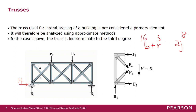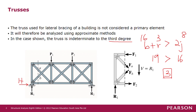If B plus R is greater than 2J, then the truss is statically indeterminate. The degree of indeterminacy is given by B plus R minus 2J. In this case, B plus R is 19 and 2J is 16, so B plus R is greater than 2J by 3, meaning we have indeterminacy to the third degree. This means we have 3 additional unknowns without available equations to solve, so we must make 3 assumptions to have an equal number of equations to unknowns.